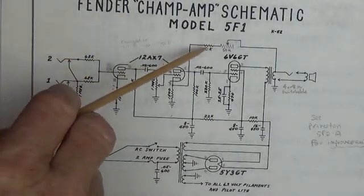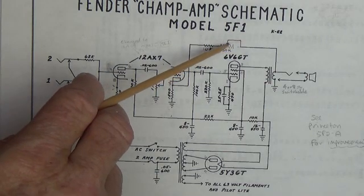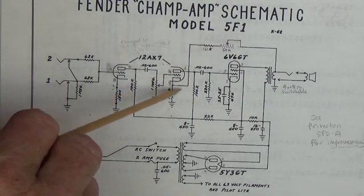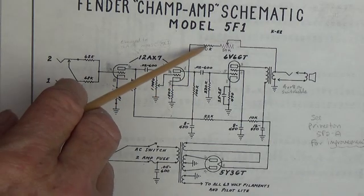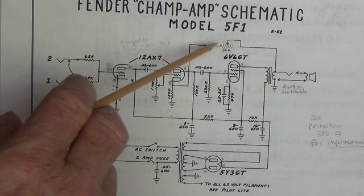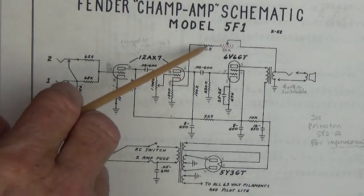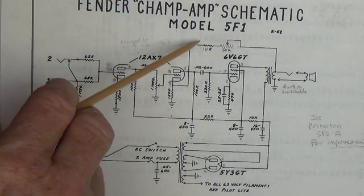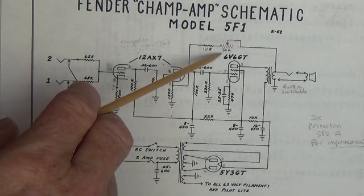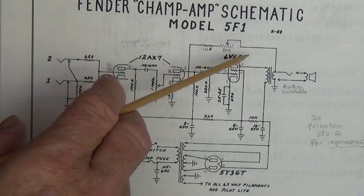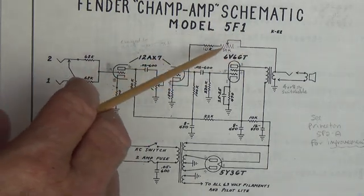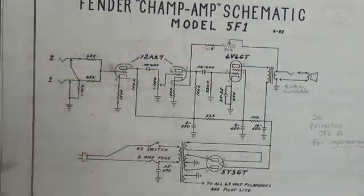So with this arrangement, if the pot is set to minimum resistance, I have 10K, which is about half of the 22K that was originally in the circuit, and with the pot at maximum resistance I have about 60K here in series, so that I'm bracketing the original 22K from about half to three times, which gives me a broad range here of different amounts of negative feedback.